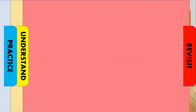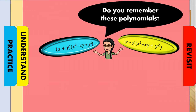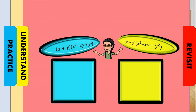Let us revisit a very important topic that will help us understand the sum or difference of two cubes. Are you familiar with these polynomials? Now, what are the products of these two sets of polynomials? Let us multiply them. Our first set of multiplicants are x plus y and x squared minus xy plus y squared.